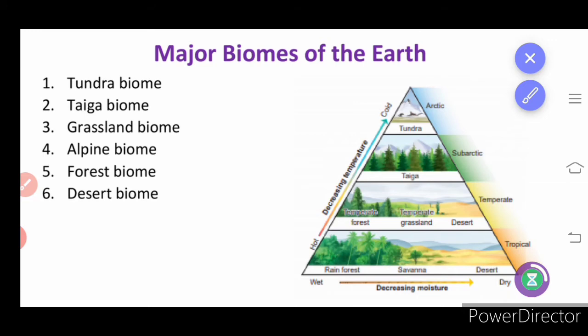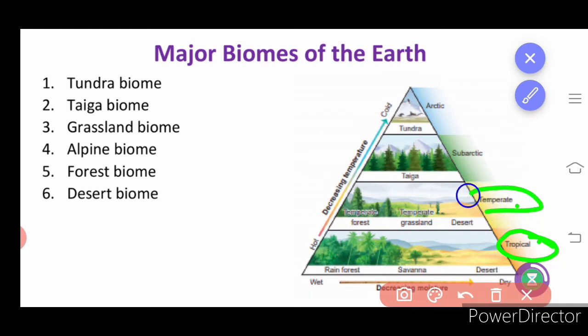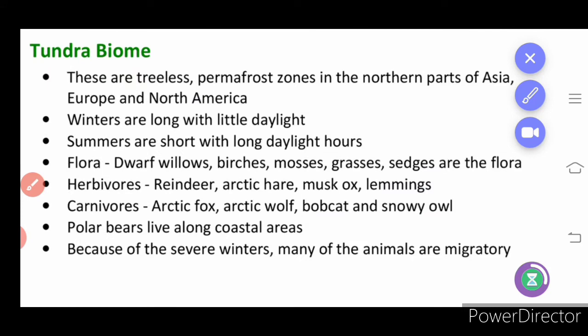Next we will learn about the major biomes on the earth. You can see the diagram here showing how they are classified based on their vegetation. From hot climatic conditions to cold climatic conditions, the number of organisms reduces as you go to colder areas. More hot is called tropical, next is temperate, then arctic — very cold — and below that cold level is called the sub-arctic region.